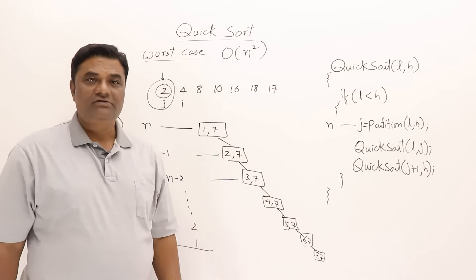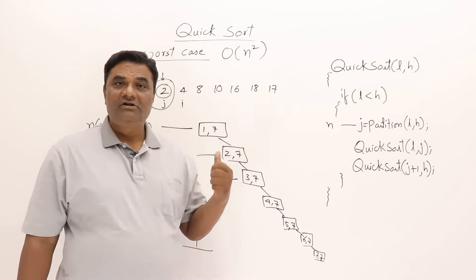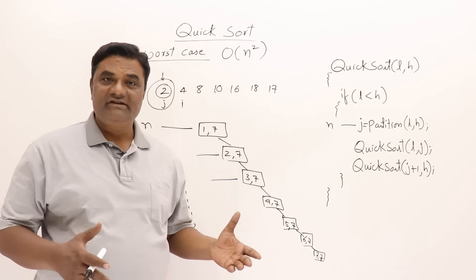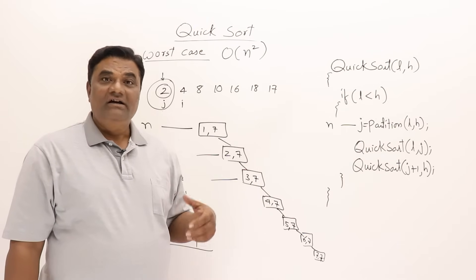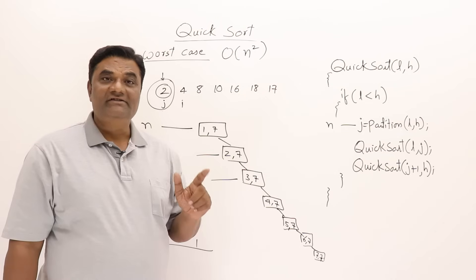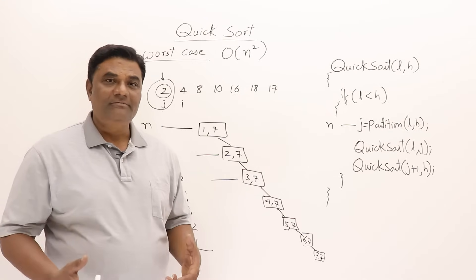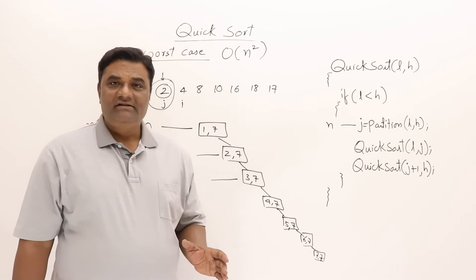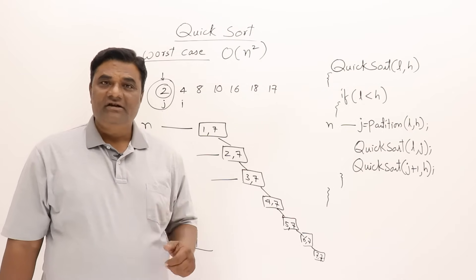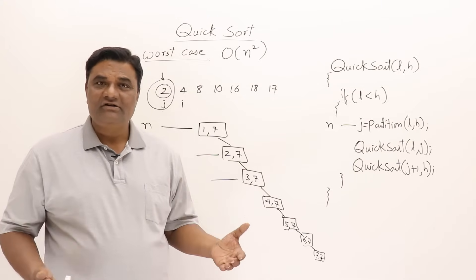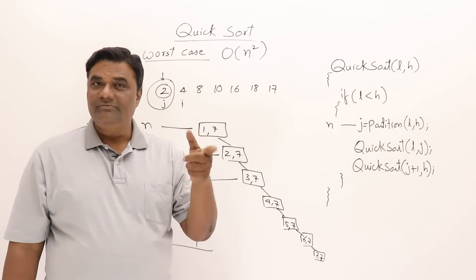The worst case of O(n²) occurs when the list is already sorted. This is the main problem with QuickSort. Comparing with merge sort: merge sort has no best or worst case distinction — its time is always O(n log n). QuickSort has an average time of O(n log n) but a worst case of O(n²). The problem is that a sorted list is very common, since we often re-sort lists that are already in sorted order.